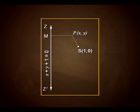As we can see in the figure, we have point P(x, y) and S as (1, 0). We can also see ZZ' as the directrix for x + y + 1 = 0, and PM is drawn perpendicular to ZZ'.